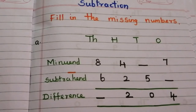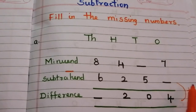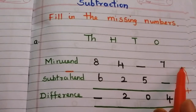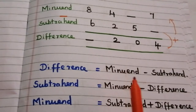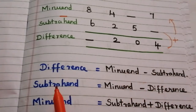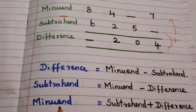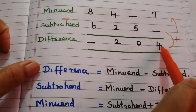We have to find the missing digits in the minuend, subtrahend, and difference. We know that if we add the subtrahend and difference, we get the minuend. To find a digit in the difference, we subtract the subtrahend from the minuend. To find a digit in the subtrahend, we subtract the difference from the minuend. To find a digit in the minuend, we add the subtrahend and difference.